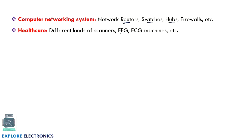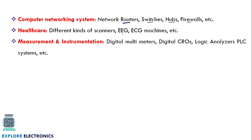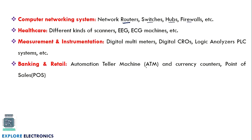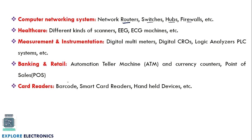In healthcare, ECG machines, EEG scanners, and X-ray equipment use embedded systems. In measurement and instrumentation, digital multimeters, digital CROs, logic analyzers, and PLC systems are examples. In banking, ATM machines, currency counters, and point-of-sale systems are embedded systems. Card readers such as RFID card readers — like the fast-tag system used at tolls — barcode readers, smart card readers, and handheld devices are further examples. These are a few of the many application areas where embedded systems are used. Thank you.